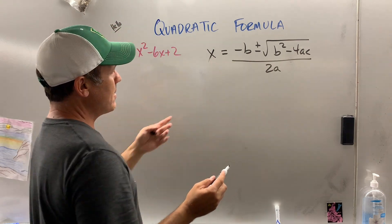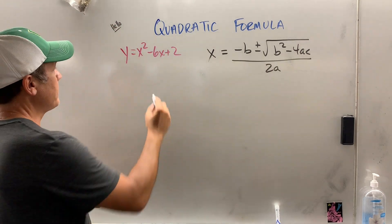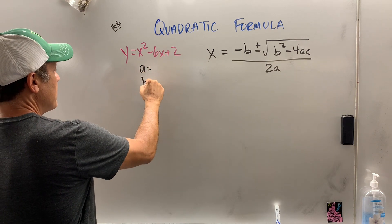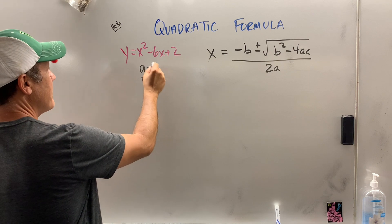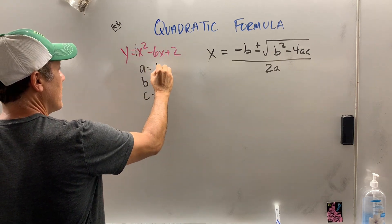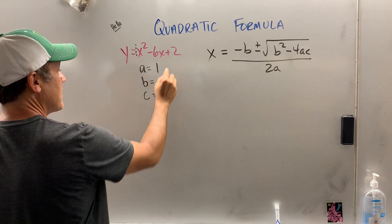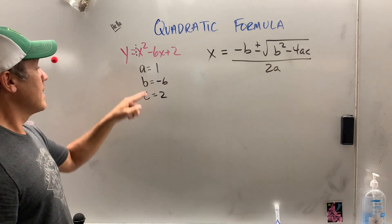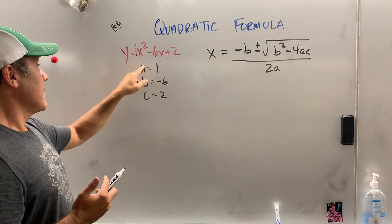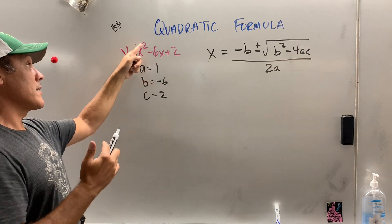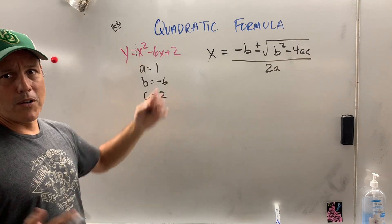So now what is this a, b, c business? I list my a, b, c's going down, not in a line going across. What is my a value? That invisible one. My b value is negative 6. My c value is 2. The b value is the number to the left of the x. The a value is to the left of the x squared term. The c value is the number with no x.